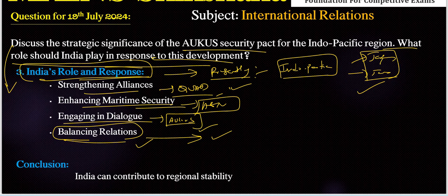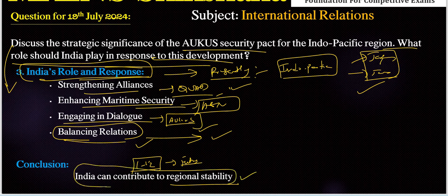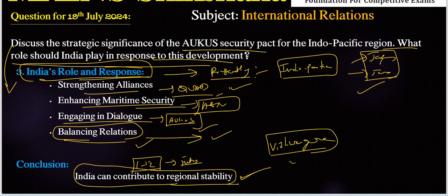In the conclusion part, we need to connect with one to one-and-a-half lines of futuristic note. If India follows the above measures by playing a proactive role, India can contribute to regional stability and ensure its strategic interests are safeguarded in the evolving geopolitical landscape. We can also include phrases like 'Vasudhaiva Kutumbakam' or 'Vishwa Guru' regarding India's significance.